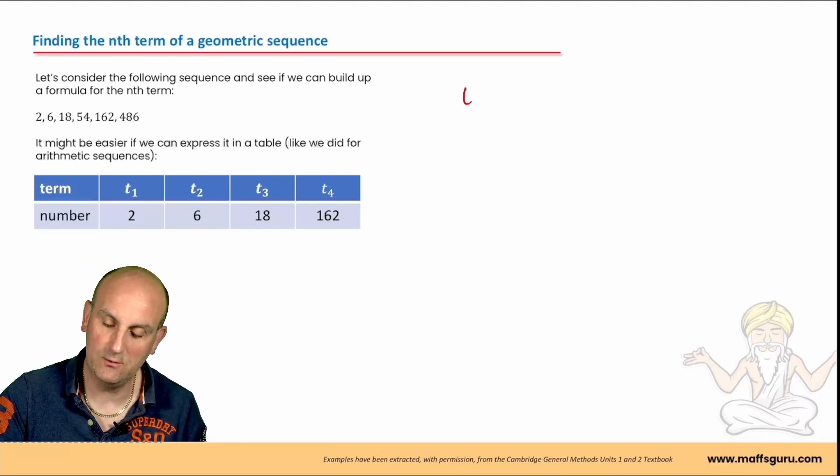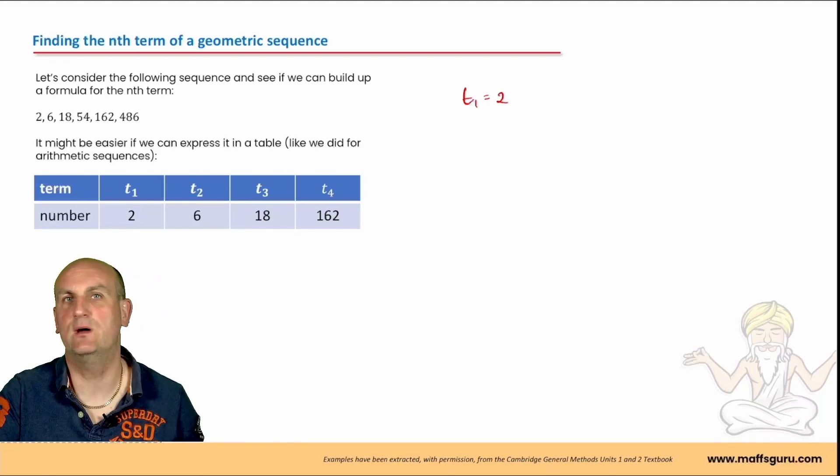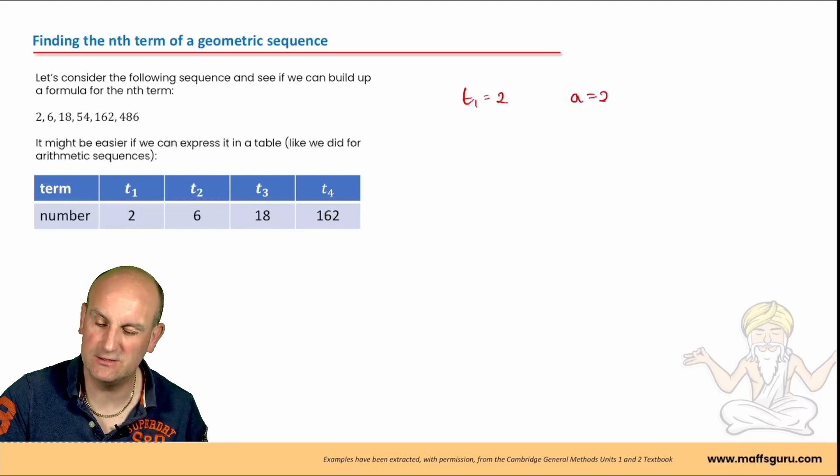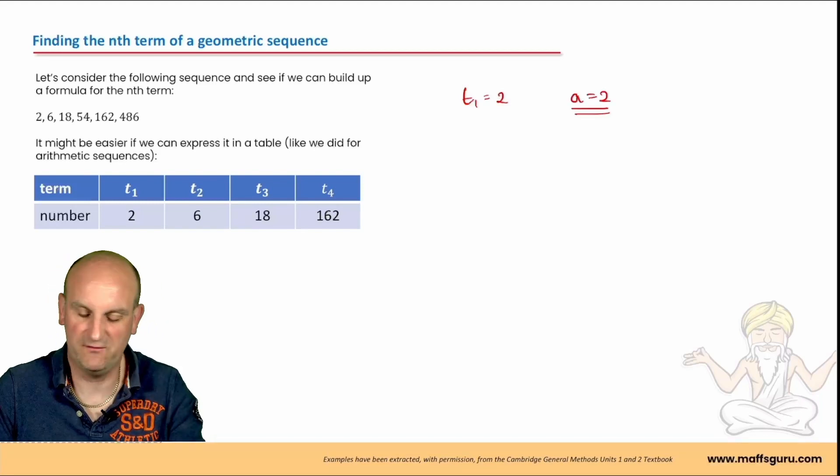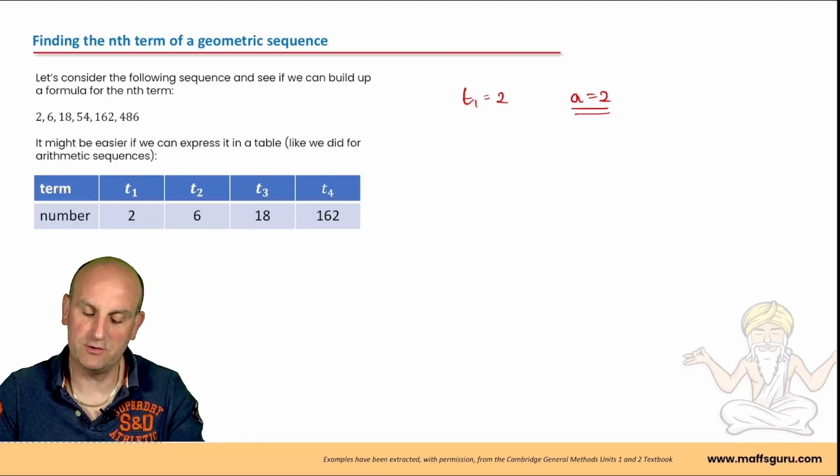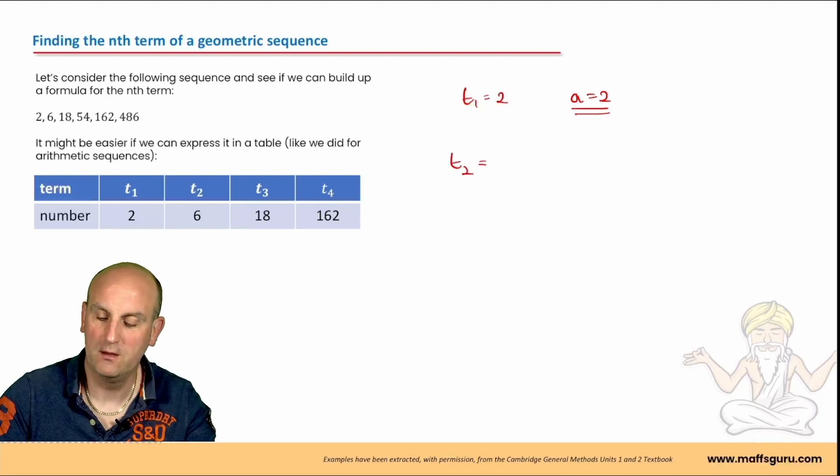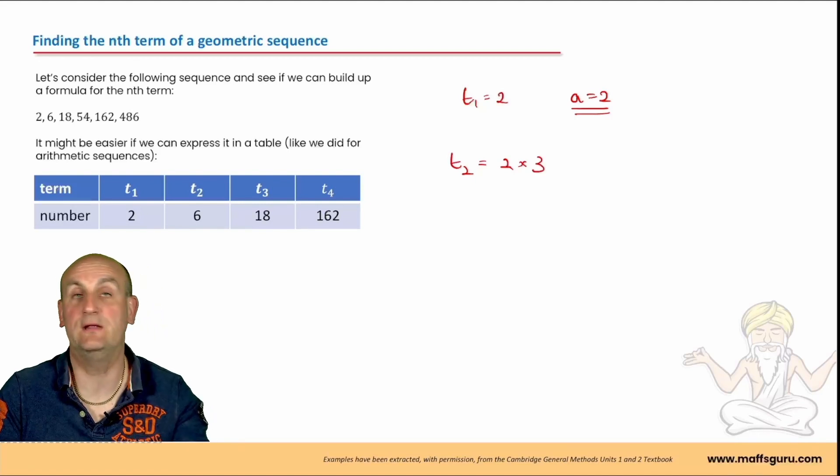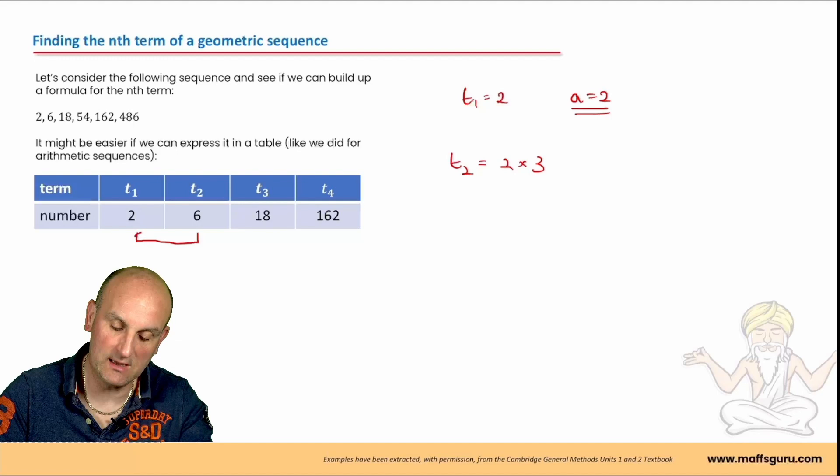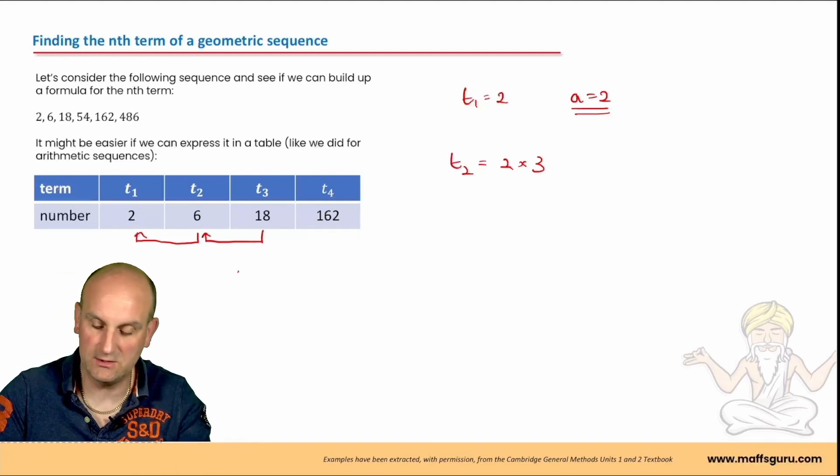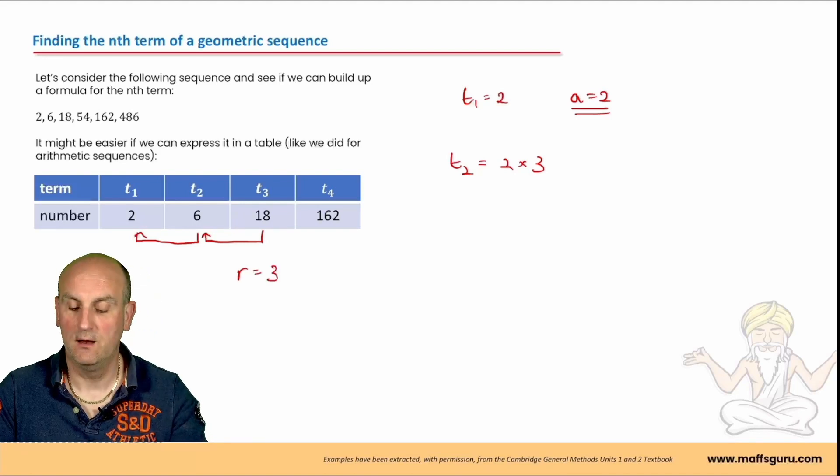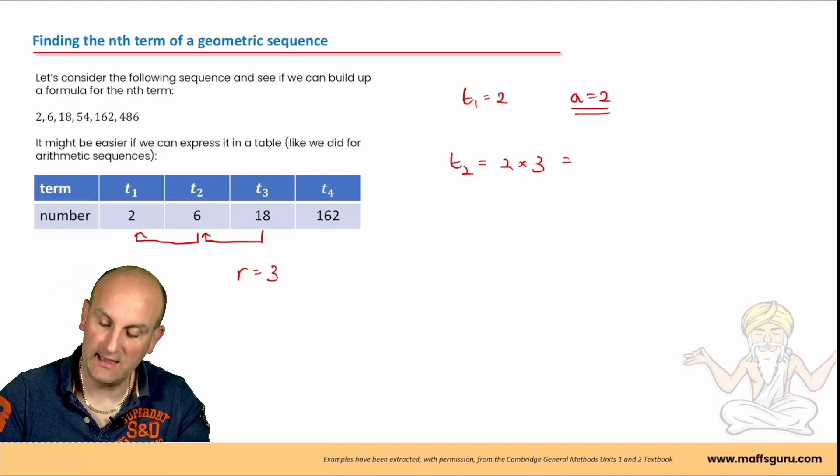We know that t1 is 2. In a previous video, we said that t1 and a were the same thing. So I now know that a is 2, my first term is 2. What am I going to try and find now? How do I get to t2? Well, I did 2 times my common ratio of 3. If you don't know how to find the common ratio, 6 divided by 2 gave me 3, 18 divided by 6 gave me 3. So my r is equal to 3.